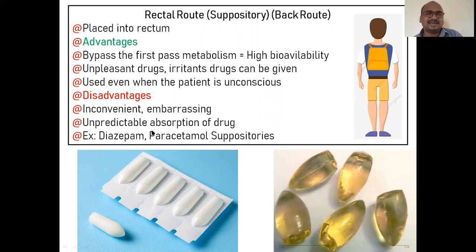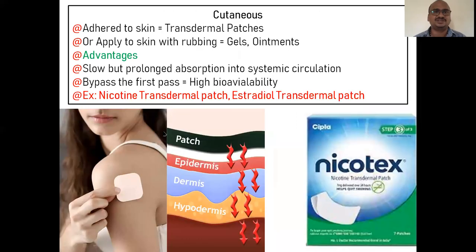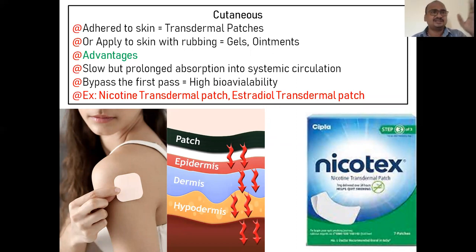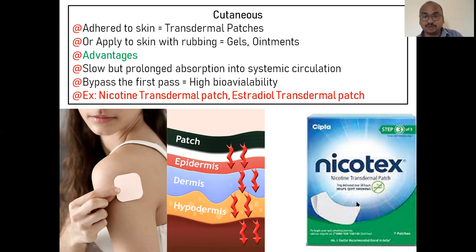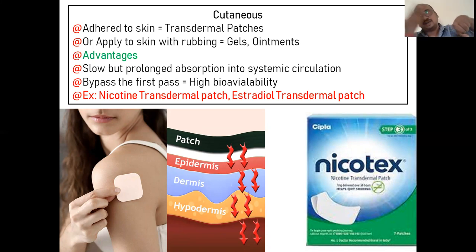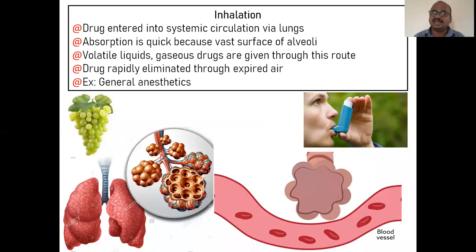Disadvantages of rectal route include inconvenience, embarrassment, and unpredictable absorption. Cutaneous or transdermal route: foreigners prefer transdermal patches while Indians prefer tablets. In the patch, the drug enters through the epidermis, dermis, and hypodermis into the bloodstream — for example, lidocaine patch. This route also bypasses first-pass metabolism. Gels and ointments can be rubbed on the skin to be absorbed into systemic circulation, or transdermal patches can adhere to the skin.